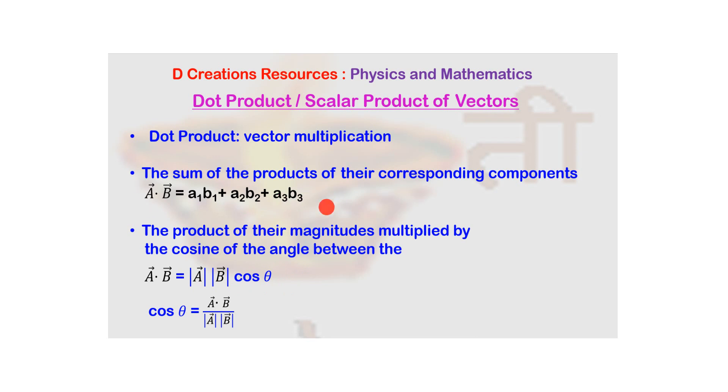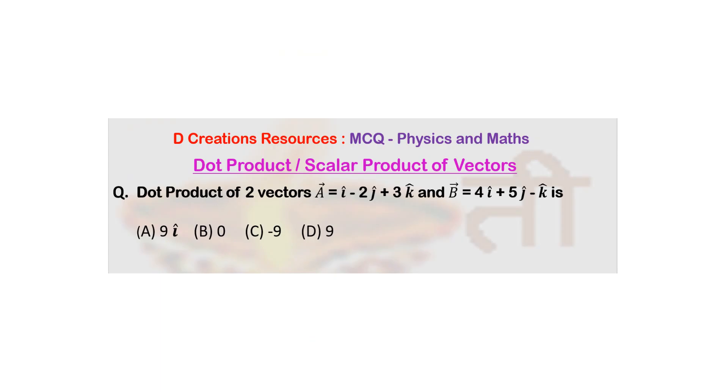Remember we are going to use this definition. So the question here. What are the i components? 1 and 4. So 1 into 4 is 4. j components minus 2 and 5. So minus 2 into 5 is minus 10. And k component 3 and minus 1. So 3 into minus 1 is minus 3.